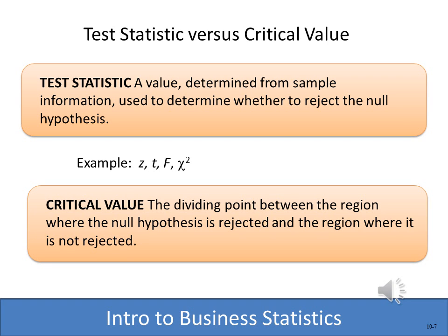The third step is to identify the test statistic. After selecting the level of significance — whether 0.01, 0.10, or 0.05 — we come up with a test statistic: t, z, f, or chi-square. The critical value is the t or z that corresponds to the level of significance. We then compare the critical value to the value we actually compute. For example, at a 0.05 significance level with a two-tail test, we end up with a z value of approximately 1.96. If our computed z is greater than or less than that, it helps us determine whether to reject or not reject the null hypothesis.